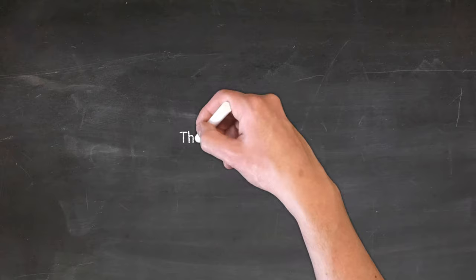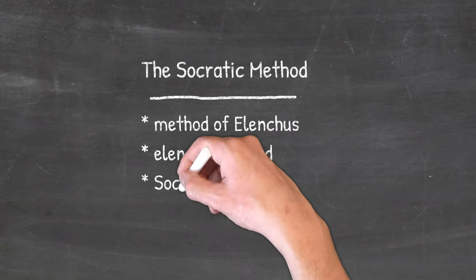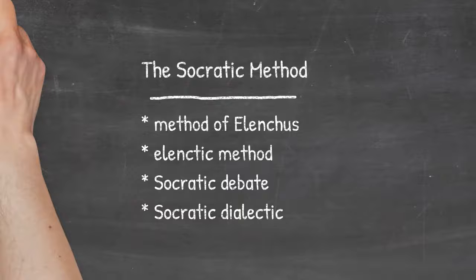The Socratic Method, also known as Method of Elenchus, Elenctic Method, Socratic Debate, or Socratic Dialectic, is Socrates' way of discussing and investigating the truth of opinions.